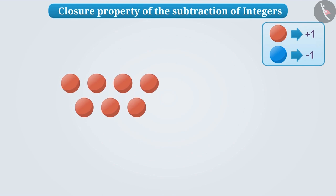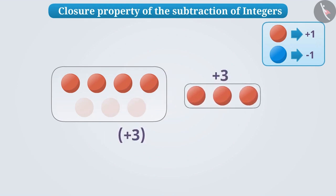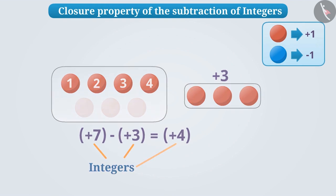If we take seven red balls, what will be their value? Since we have taken the value of one red ball as plus one, the value of seven red balls will be plus seven. If we take out three red balls from these, then it will mean we are subtracting plus three from plus seven. After subtracting, there are now four red balls left which have a value of plus four. That is, plus seven minus plus three is equal to plus four. Here, the result of the subtraction of two integers is always an integer.